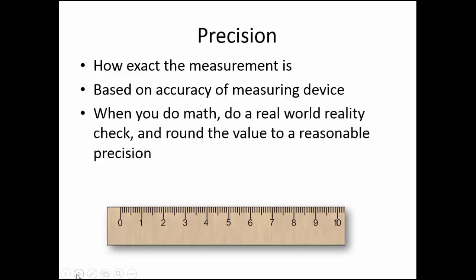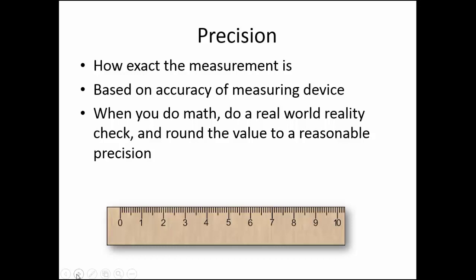Sometimes when we convert math to real-world distances, the math gives us a lot of decimal places of precision. This is the time to do a real-world reality check. For example, does it make sense to list the distance between San Francisco and Paris as 8,372.97113 miles? No way. That level of precision is to less than one-half a foot.